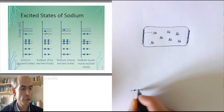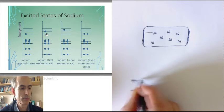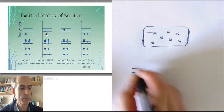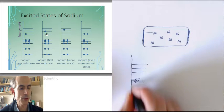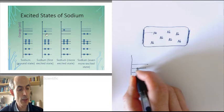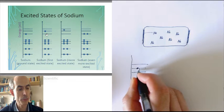first shell, second shell has eight electrons in it, third shell, I'll expand the scale, has one electron in it, but this electron in the excited state might drop down to here.